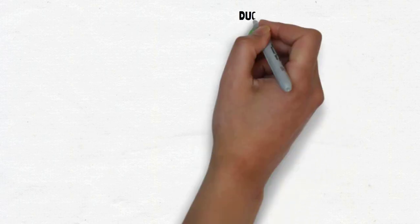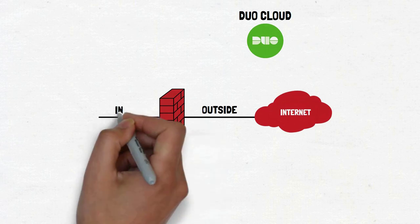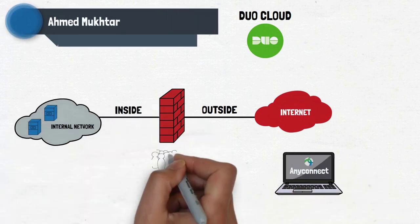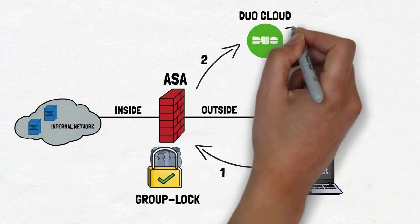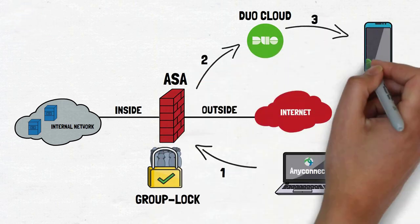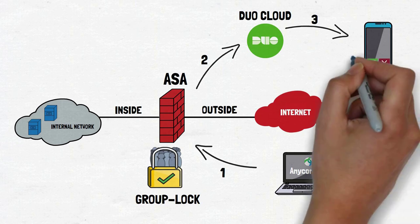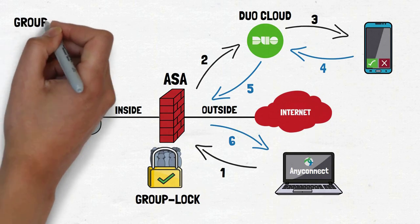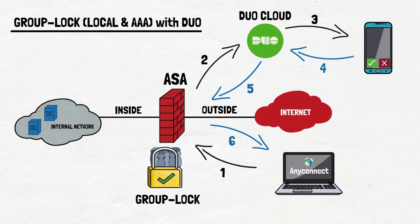Implementing Duo's security can be tricky, especially if you need your existing features to work alongside Duo. My name is Ahmad and today we will be looking at how to configure the group lock feature with the Cisco ASA alongside Duo's multi-factor authentication. This video is for IT professionals who are going to deploy Duo with the ASA or who have already deployed it and need to learn how to use the group lock feature with Duo in place.